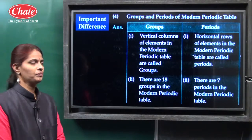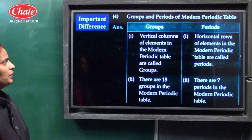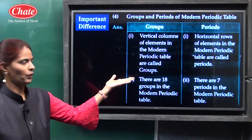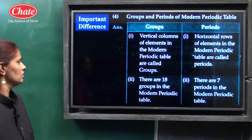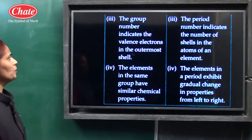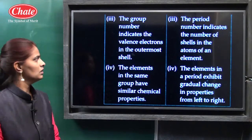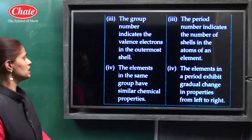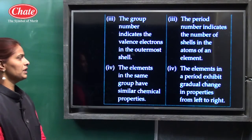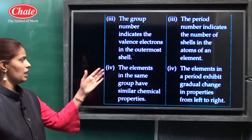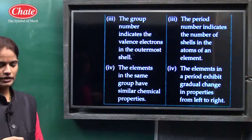The important question is: the difference between groups and periods in the modern periodic table. Groups: vertical columns of elements in the modern periodic table are called groups; there are 18 groups. Periods: horizontal rows of elements in the modern periodic table are called periods; there are 7 periods. The group number indicates the valence electrons in the outermost shell; the period number indicates the number of shells in the atoms. Elements in the same group have similar chemical properties; elements in the same period exhibit a gradual change in their properties from left to right.